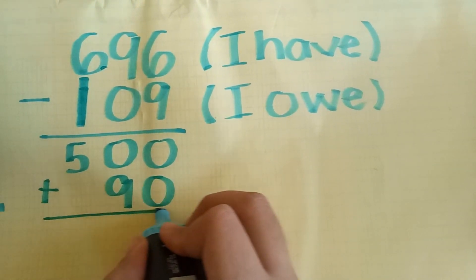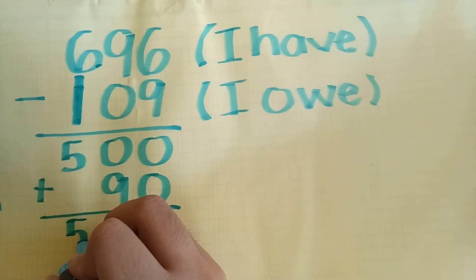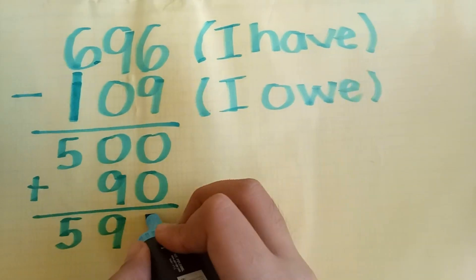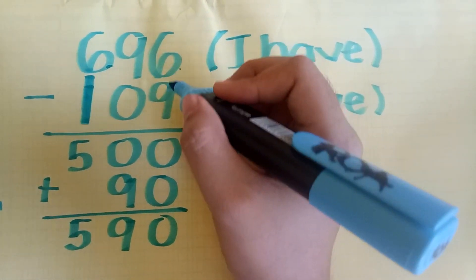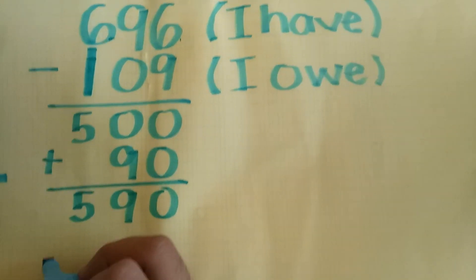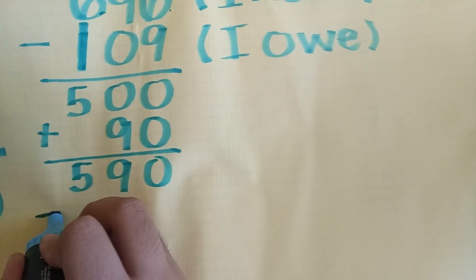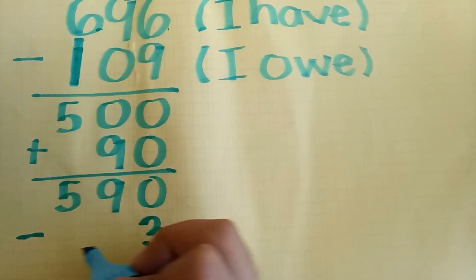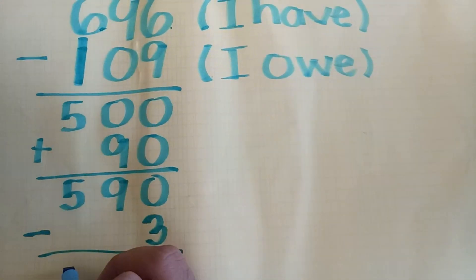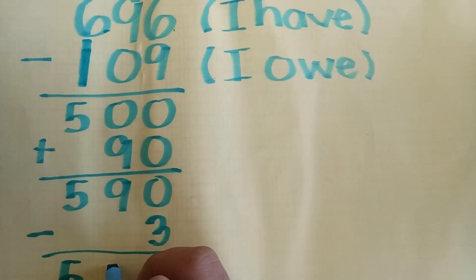Mental math: we still have five hundred ninety. Next, I have six ones, I owe nine ones, I still owe three ones. Mental math: five hundred eighty-seven.